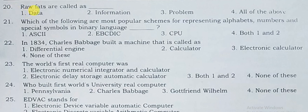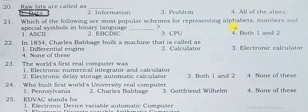Raw facts are called as data. Which of the following are the most popular scheme for representing alphabets, numbers and special symbols in binary language? It is ASCII and EBCDIC — both 1 and 2 are the options.